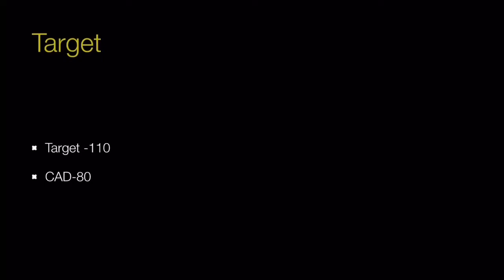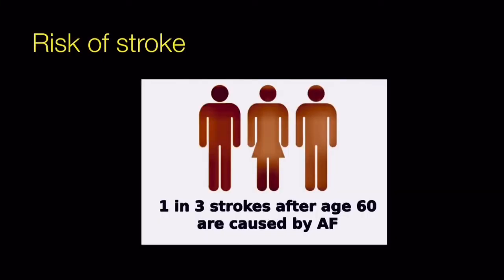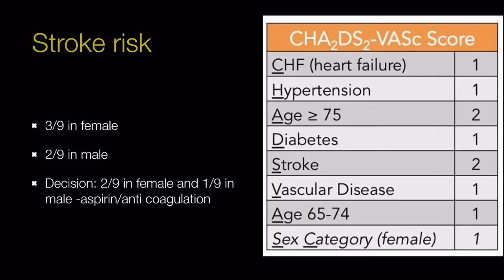Coming to the second R — assessment of risk of stroke. One in three strokes after age 60 are caused by atrial fibrillation. In every patient with AF, we use the CHA₂DS₂-VASc score: C — congestive heart failure; H — hypertension; A — age ≥75; D — diabetes; S — stroke; V — vascular disease; second A — age 65 to 74; and the last S — female sex category.